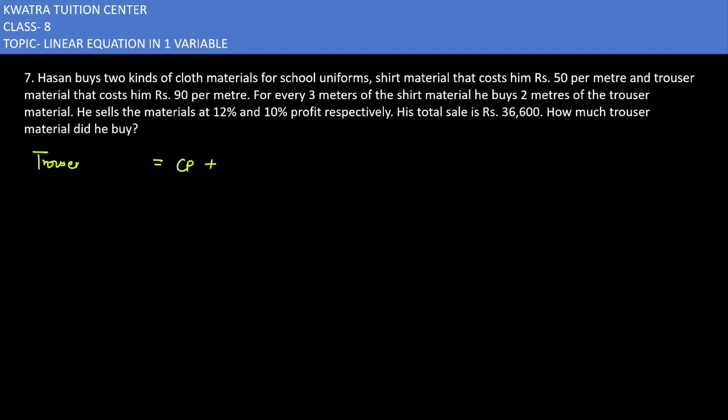Selling price for trouser will be CP plus Profit. CP is 180x, profit is 18x. 180 plus 18 equals 198x. This is the selling price for trouser material.